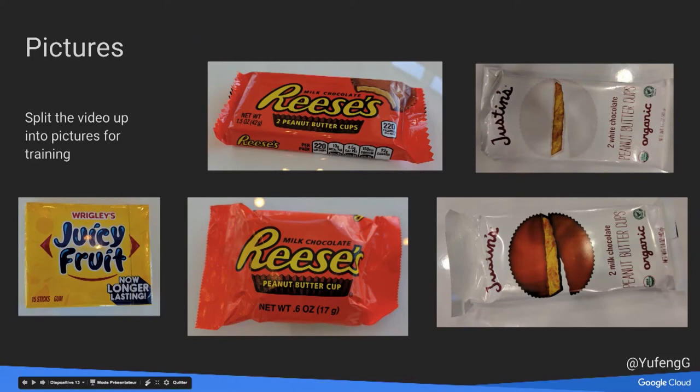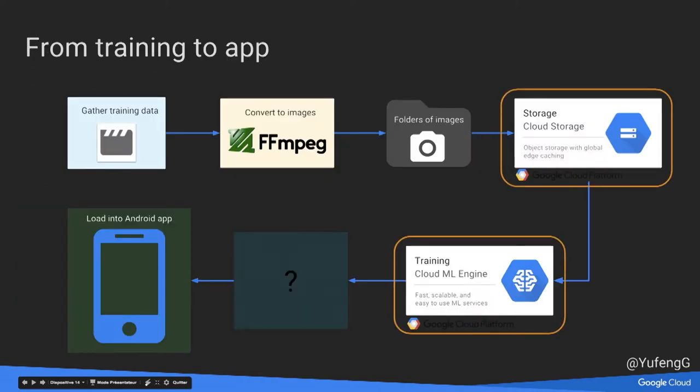We take these pictures and send them to training. In my case I uploaded them to the cloud because my MacBook was running out of space from all the images. I zipped them up, put them in the cloud, and did my training there. You can do it on your data center or on your local machine if you have a lot of storage. The training we did uses transfer learning.